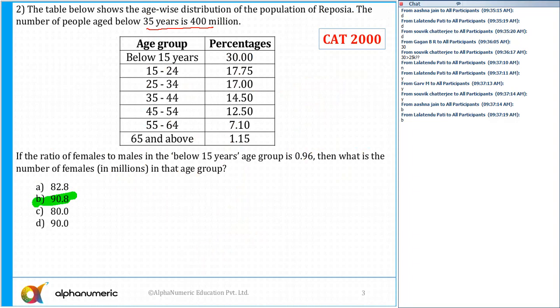What is the total percentage of people below 35 years? Just add these values. All these are less than 35 years—below 15 years—so the sum total of these values...